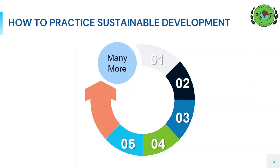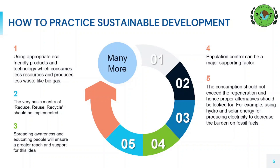Now how can we actually practice sustainable development? For starters, we must start small and think big. Use eco-friendly products and technology which consume less resources and produce less waste. Use the very basic mantra of the three R's: reduce, reuse and recycle. Spread awareness and educate people about the same. Population control can be a major supporting factor. The consumption should not exceed regeneration at any cost, and hence proper alternatives must be looked for. For example, use hydro and solar energy for producing electricity to decrease the burden on fossil fuels. You can also comment any exclusive idea that you have which we can implement in our daily lives.